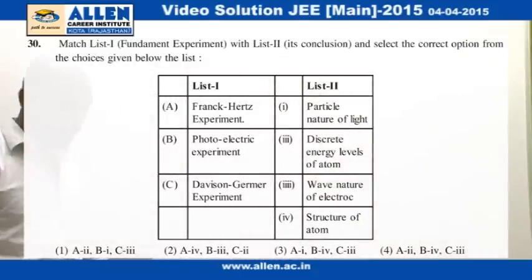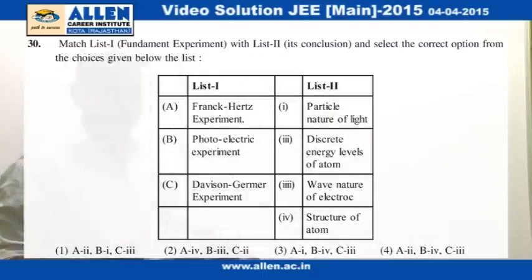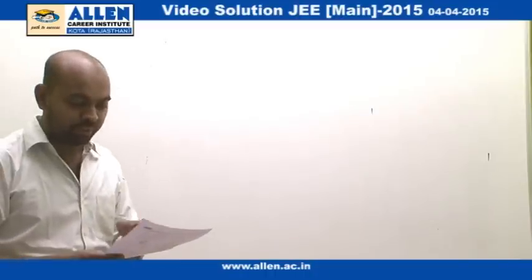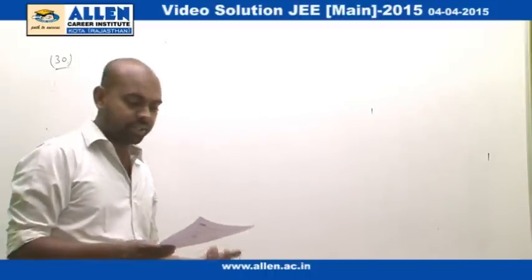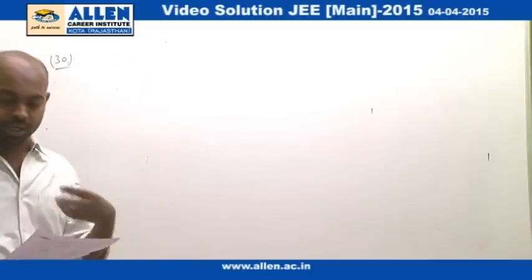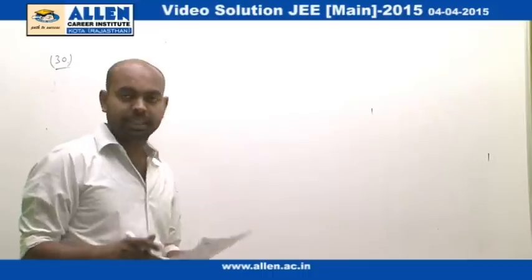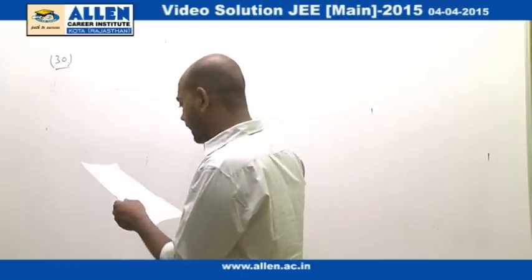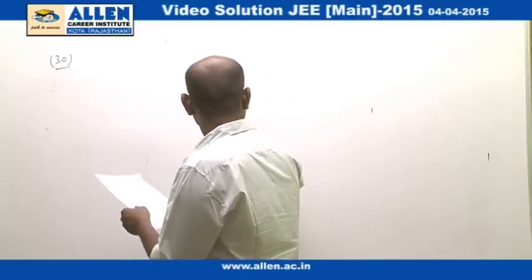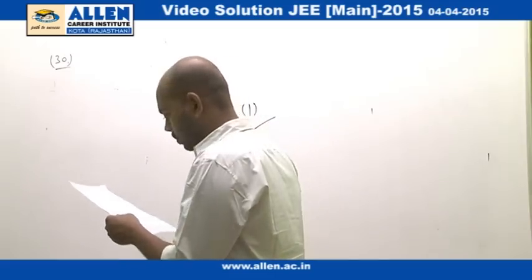The photoelectric experiment, explained by Albert Einstein, explains the particle nature of light. The Davisson-Germer experiment is very famous because it proves de Broglie's theory — the wave nature of the electron. The Franck-Hertz experiment explains the discrete energy levels of atoms. By looking at these options, the answer to this question would be option 1. Thank you.